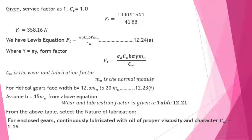Using the Lewis equation for helical gears (equation 12.24A): FT = sigma_d × CV × B × capital_Y × mn / CW, where CW is the wear and lubrication factor from table 12.21. For enclosed gears continuously lubricated with oil of proper viscosity, CW = 1.15. Face width B ranges from 12.5·mn to 20·mn, so we take B = 15·mn.